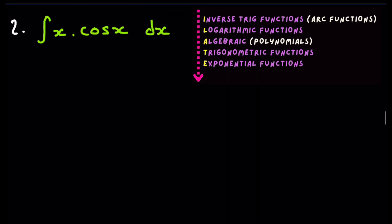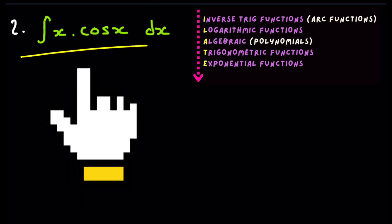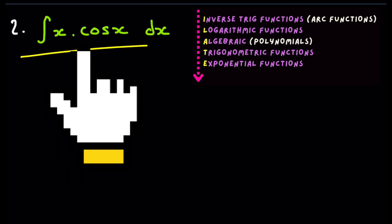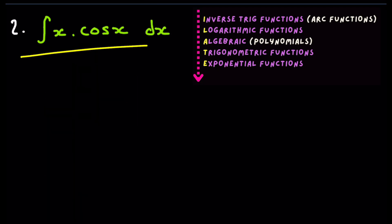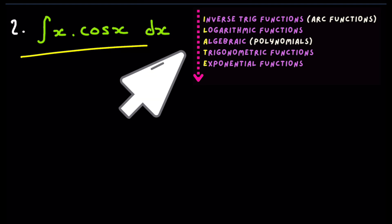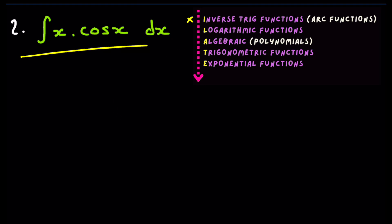Question two: x times cosine x. Going down ILATE again — no inverse trig function, no logarithmic function, but we do have an algebraic expression. That's the same as question one, that's x. So u is equal to x, and u prime is equal to one.